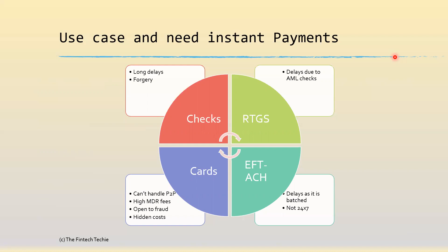Credit cards can't handle P2P — if you want to transfer money to a friend, you can't do it via a credit or debit card. They have a lot of hidden costs, penalty costs, and a high MDR or merchant fee, which discourages people from using them. Credit cards are also prone to fraud because of ways to decipher the chips or card numbers. Debit cards are not a good way of doing payments either — you can't build a credit history from them, and most importantly, a debit card opens up your account to fraud.